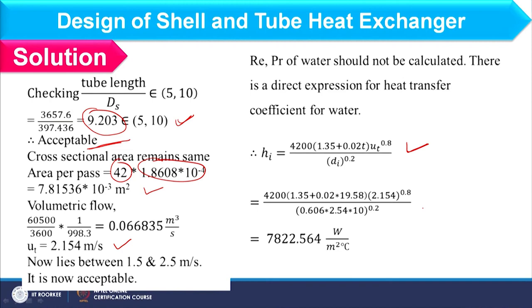For tube-side heat transfer coefficient of water, we use the specific water correlation rather than the general equation. Inputting the velocity and inner diameter in mm into the expression, the tube-side heat transfer coefficient h_i = 7822.564 W/m²°C.